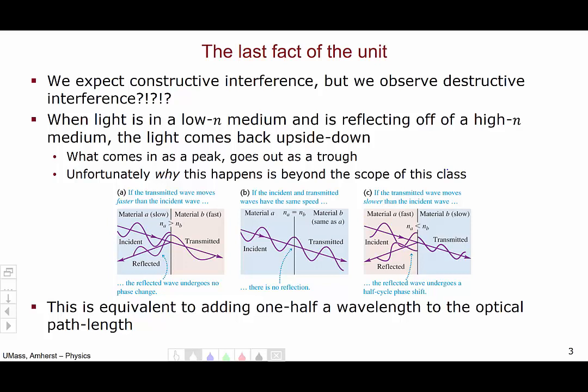The reason is that when light in a low-n medium is reflecting off of a high-n medium, that light comes back upside down. So what comes in as a peak goes out as a trough, shown here in the third picture. The incoming light is at a peak, and the outgoing light is a trough.